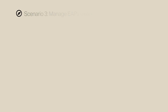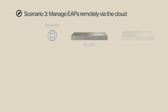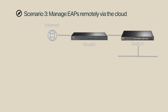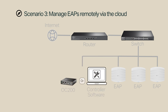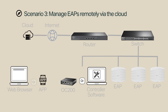To manage EAPs remotely via the cloud, connect your router to the Internet, a switch to the router, and EAPs to the switch. Connect your controller — either an OC200 or a PC with controller software — to the local network. You can log in to your TP-Link ID from any place so long as you have access to the Internet, and then use either a web browser or the Omada app to manage EAPs remotely via the cloud.